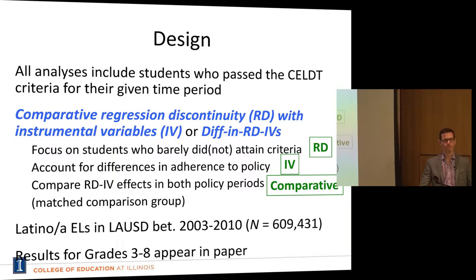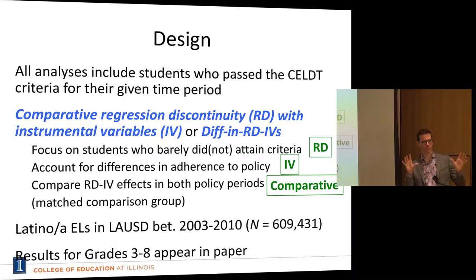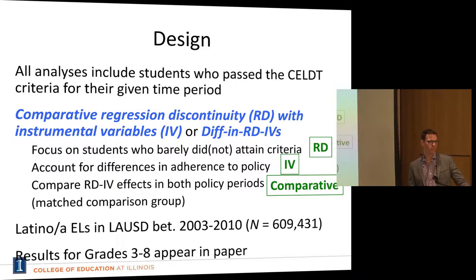That's a valid concern — we do have two different complier populations — but whatever the difference is, it's a product of the policy change. They're selecting at one threshold, with more compliers in one period and fewer in the other because of the policy. It's not as much of a concern because you're evaluating what would happen in the real world under a particular policy regime. The ITT estimates were consistent with what you get with the RDIV.